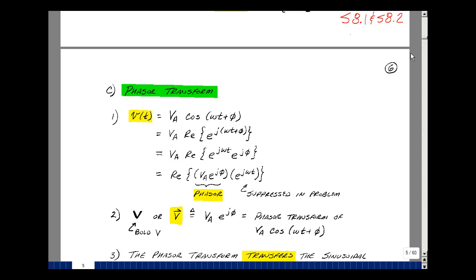So let's see a voltage V of t, which again has an amplitude, an angle, and a frequency. In other words, V sub a times the cosine of omega t plus phi. We're going to do the phasor transform and transform this from the time domain to the frequency domain. So let's take the cosine of omega t plus phi and write that as the real part of e to the j quantity omega t plus phi.